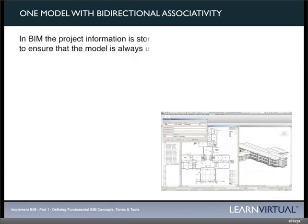One model with bidirectional associativity is another very important concept in BIM. With CAD, whether by hand or computer, we had multiple drawings and documents making up a set. Today with BIM, we work generally with a single model — a consistent database integrated into one file. When we make changes in one area, because it's one model and one consistent database, it updates all other areas and keeps everything up to date.